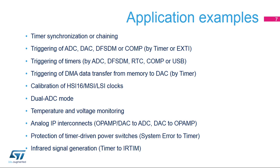Monitoring the temperature of a connected internal temperature sensor or the VBAT to ADC voltage. Analog IP interconnects — for example, connecting an op-amp or DAC to an ADC or a DAC to an op-amp. Protecting timer-driven power switches through the direct connection of system error signals to the timer break input, and infrared pulse modulation signal waveform generation using two timers.